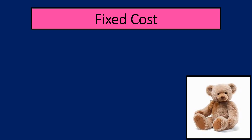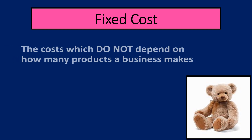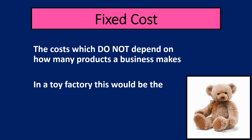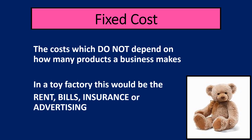The first term we're going to look at is fixed cost. These are the costs a business has which do not depend on how many products a business makes. They could make one, ten, or thousands, and these costs would not be altered. In a toy factory, the rent would be the same no matter how many bears they made. The bills — electricity, gas, heating — would be the same. They would have to pay insurance on the building regardless of how many toys they make, and they would have to advertise before they knew how many things they were going to make. These are the fixed costs of a business.